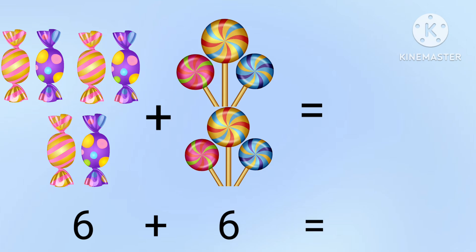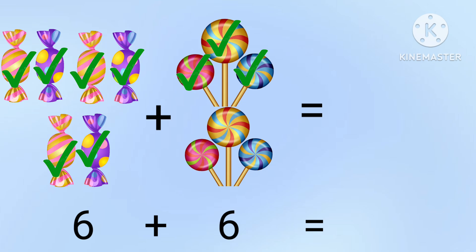Let's start counting. 1, 2, 3, 4, 5, 6, 7, 8, 9, 10, 11, 12. There are 12 candies. 6 plus 6 equal to 12.